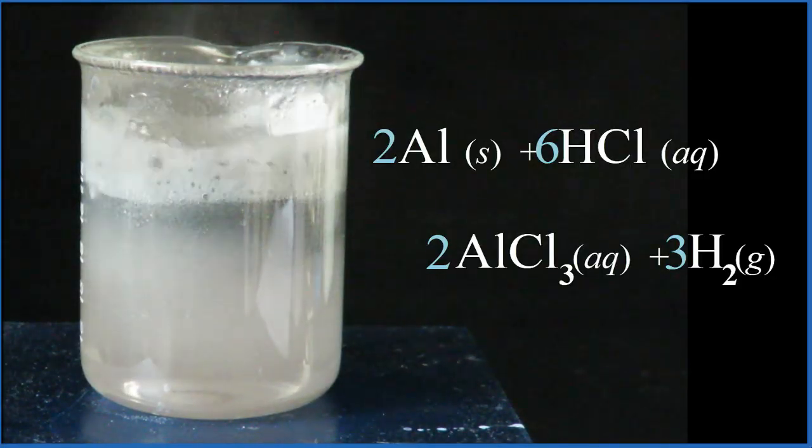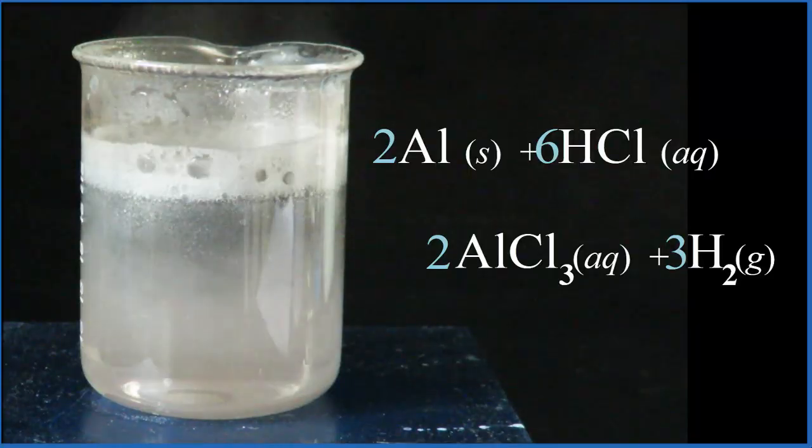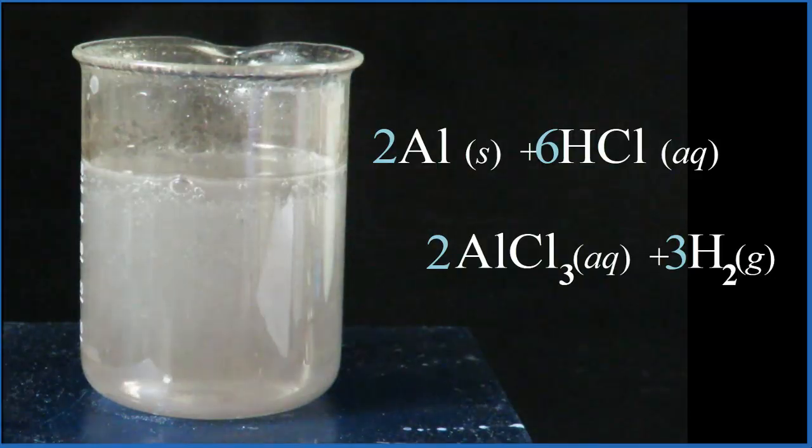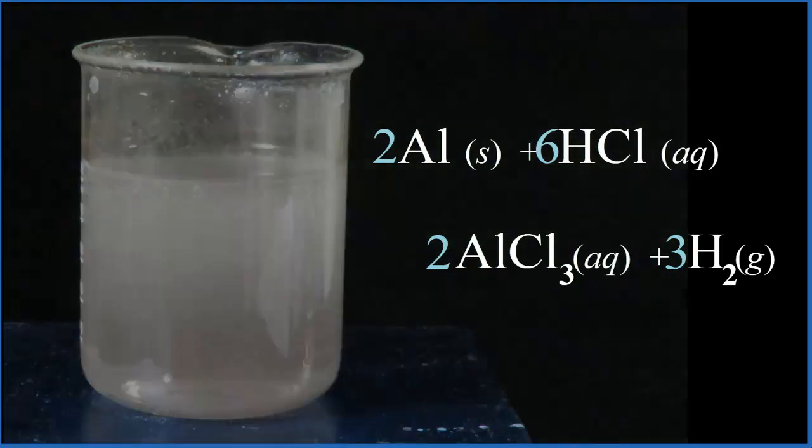The bubbles that we're seeing - that's the hydrogen gas. The aluminum chloride is dissolved in the solution. If we evaporated the solution, we could get solid aluminum chloride. This is Dr. B putting some aluminum foil in concentrated hydrochloric acid. Thanks for watching.